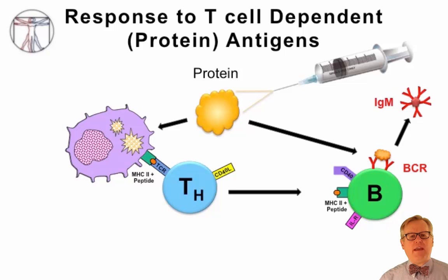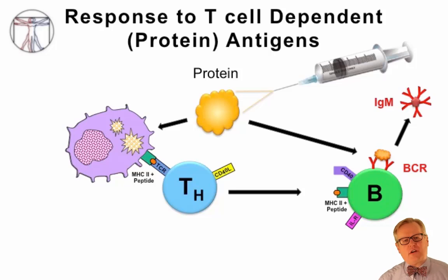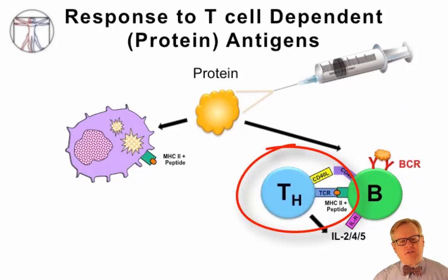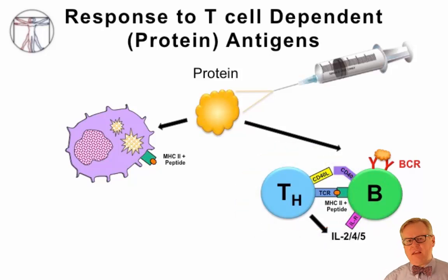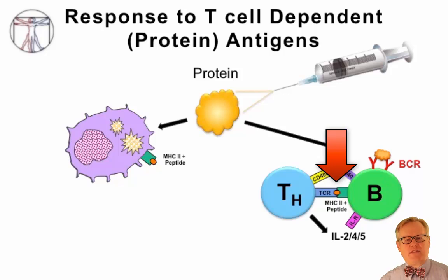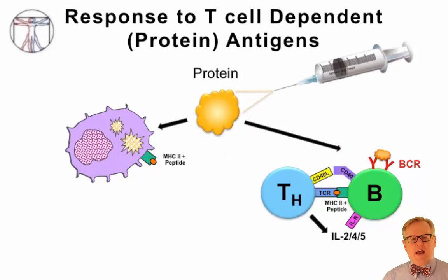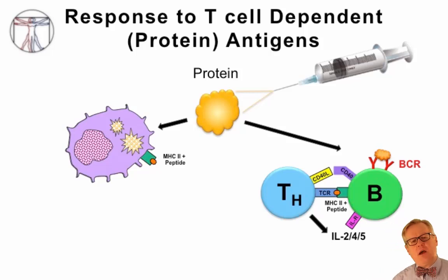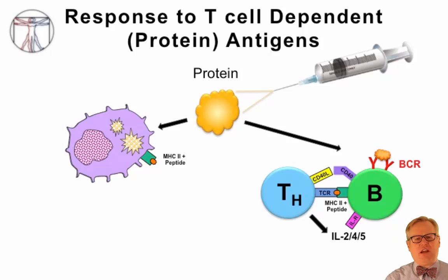B-cells cannot switch to making IgG and IgA without the help of a T-cell. So in the germinal center, they come into contact with T-cells that have been primed or activated by their interaction with antigen presenting cells. These T-cells see the same antigen being presented in the context of the MHC class II molecule on the B-cell, recognize that the B-cell is responding to the same antigen, and provide help so that the B-cell can class switch its antibodies from IgM to making IgG, IgA, or IgE.